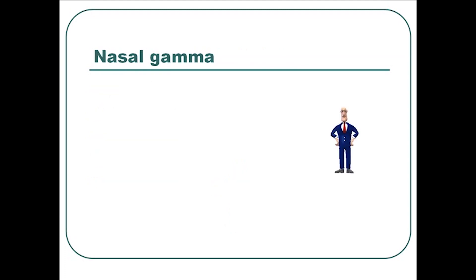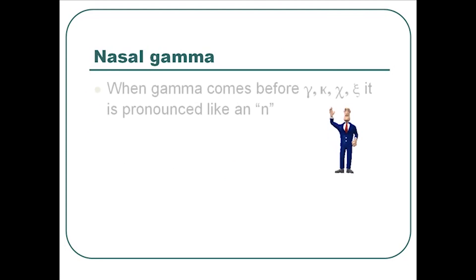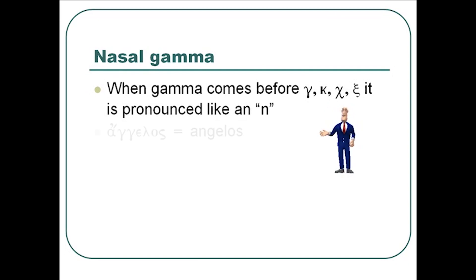One unique feature of Greek pronunciation is what's called a nasal gamma. This is when gamma is pronounced like an N sound, when it comes before another gamma, kappa, chi, or xi. So in the word angelos, you have two gammas in a row — the first one is pronounced like an N, so it's angelos, not agalos. That is what is called a nasal gamma.